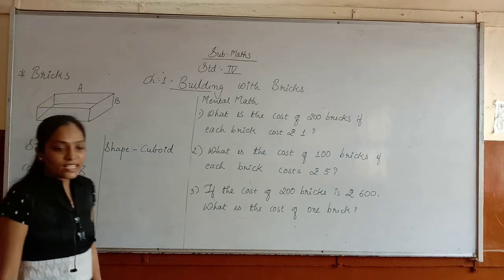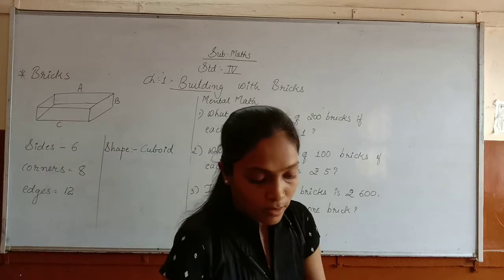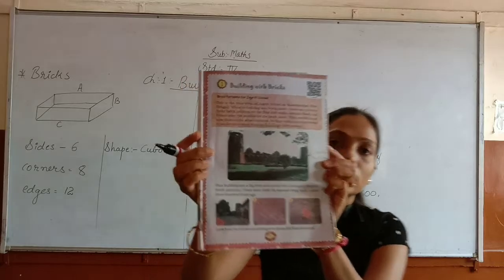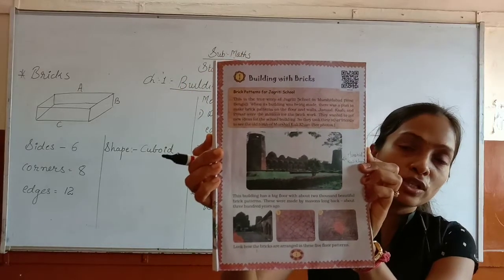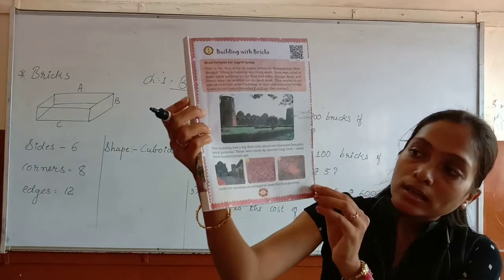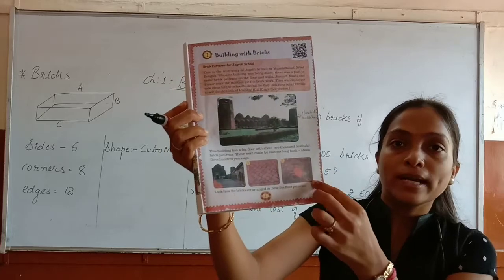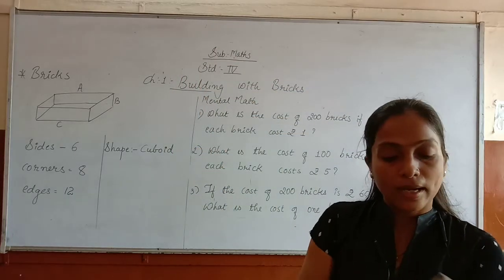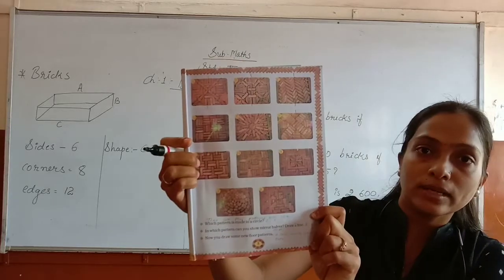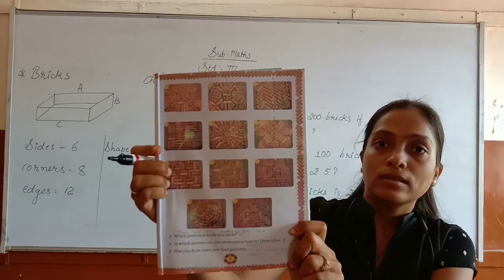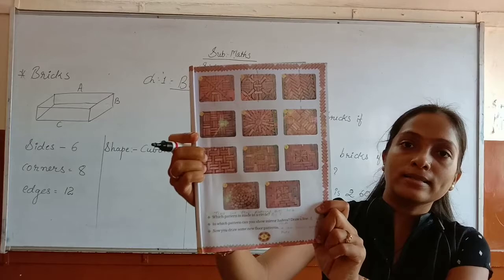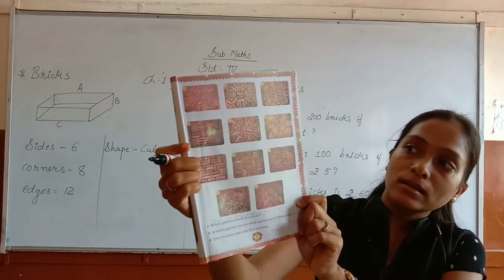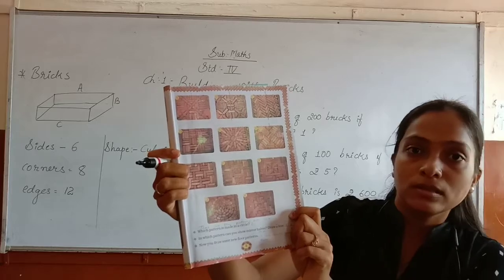In your textbook there are patterns given. You can see here — this is the tomb of Murshid Guli Khan. In this tomb, different patterns are shown. Behind also, a few patterns are given. These different patterns are made with the use of bricks, arranged in different patterns.